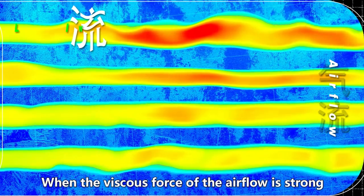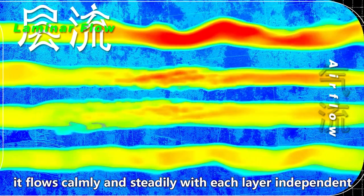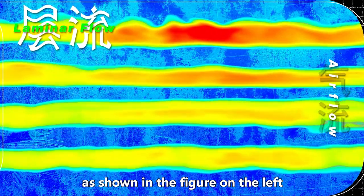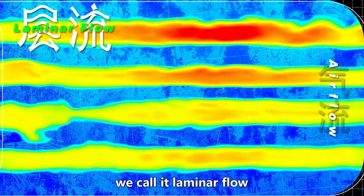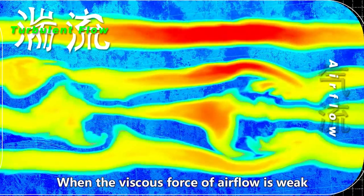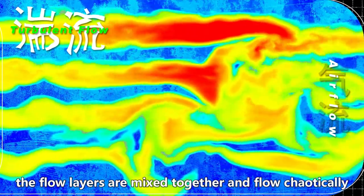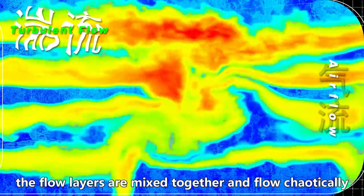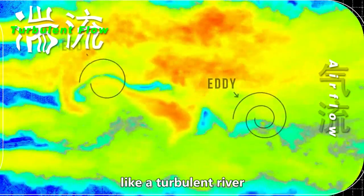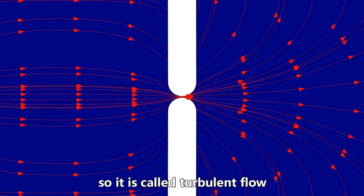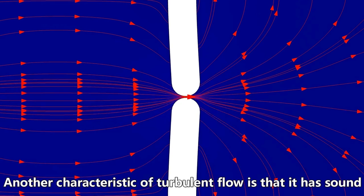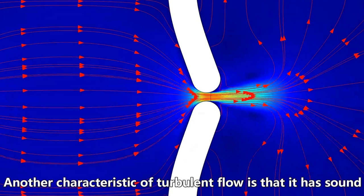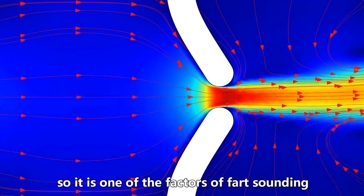When the viscous force in airflow is strong, it flows calmly and steadily with each layer independent. As shown in the chart on the left, we call it laminar flow. When the viscous force in airflow is weak and the flow layers are mixed together and flow chaotically, as shown in the chart on the right, it is called turbulent flow. Another characteristic of turbulent flow is that it has sound.